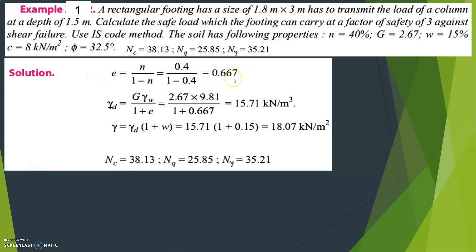E is equal to 0.667. We know the formula for dry density: gamma_D equals G into gamma_W divided by 1 plus E. Substituting G equals 2.67, gamma_W equals 9.81, and E equals 0.667, we get gamma_D equal to 15.71 kilonewton per meter cube.